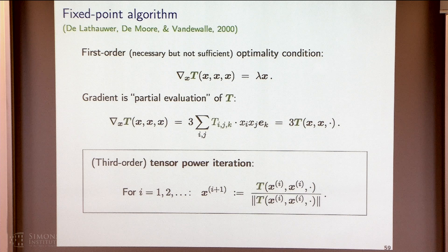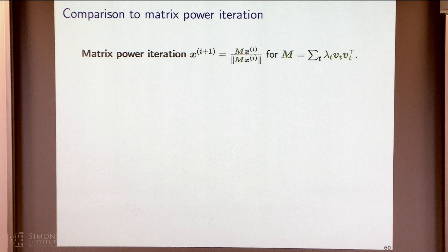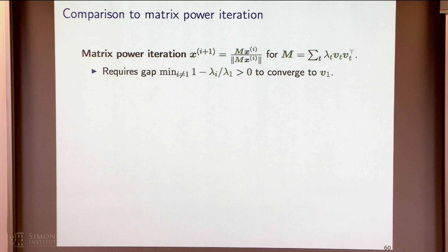I want to describe a slightly different algorithm — the tensor power iteration — to compare with what you'd do for matrices. This algorithm, first seen in a paper by De Lathauwer, De Moor, and Vandewalle, is a fixed-point algorithm based on the first-order optimality condition. The gradient at x must equal some scaling of x on the unit sphere. The gradient is a partial evaluation of the tensor as a multilinear form — essentially T(x,x,·). This gives the fixed-point iteration: x_{t+1} = T(x_t, x_t, ·) / ||T(x_t, x_t, ·)||. This looks like the tensor version of matrix power iteration. In the matrix case, T(x,x) is just Mx, so it's exactly matrix-vector multiplication followed by normalization.